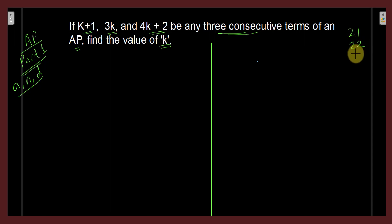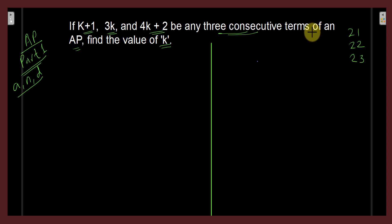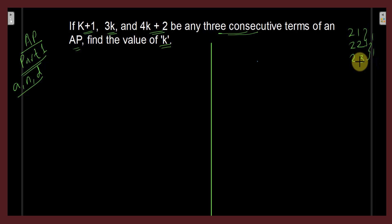Here it is given that these three terms are the consecutive terms of an AP. There is a difference between consecutive numbers and consecutive terms of an AP. Consecutive numbers means the difference between successive numbers will be 1 — like 21, 22, 23. But consecutive terms of an AP means the first, second, and third term of that arithmetic progression. In consecutive numbers the difference is always 1, but in an AP the common difference may differ.